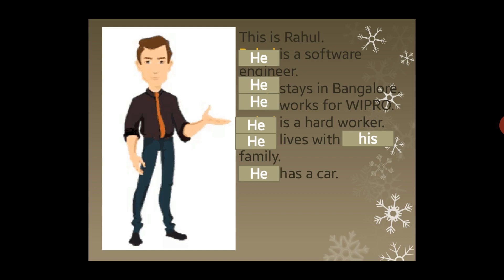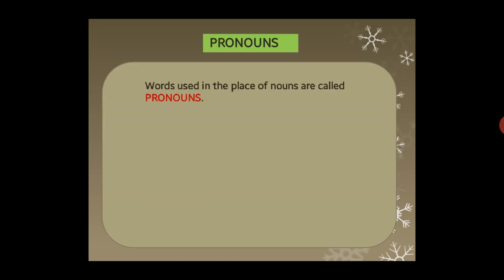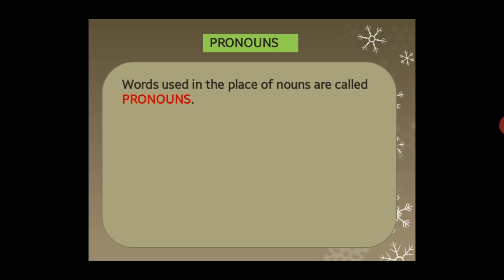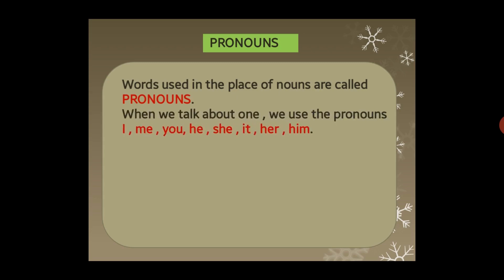So, words used in the place of nouns are called pronouns. We use pronouns in a sentence when nouns get repeated. When we talk about one person — singular — we use pronouns like: I, me, you, he, she, it, her, him. In grammar, we have to make changes for singular and plural. For singular, we use those red-colored pronouns.